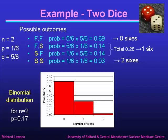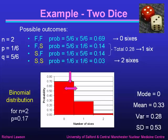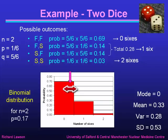This is the binomial distribution for n equals two and a probability of success of one sixth or 0.17. Once again, the most likely value — the mode — is zero, the tallest bar in this distribution. The mean number of sixes is 0.33, and the variance is 0.28, so the standard deviation is 0.53. This distribution for n equals two is quite skewed and very asymmetric, with a mode of zero.